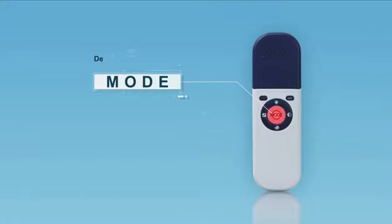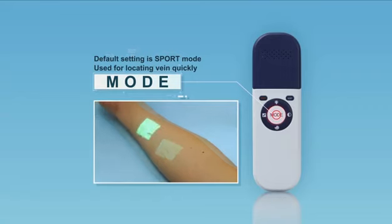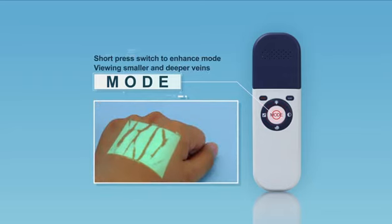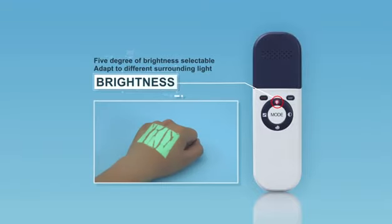Two display modes include Sport and Enhance. Default setting is Sport mode for locating veins quickly. Short press mode button to switch to Enhance mode, which is used for viewing finer image details of smaller veins and deeper veins, especially for pediatrics, obese patients, and edema patients.